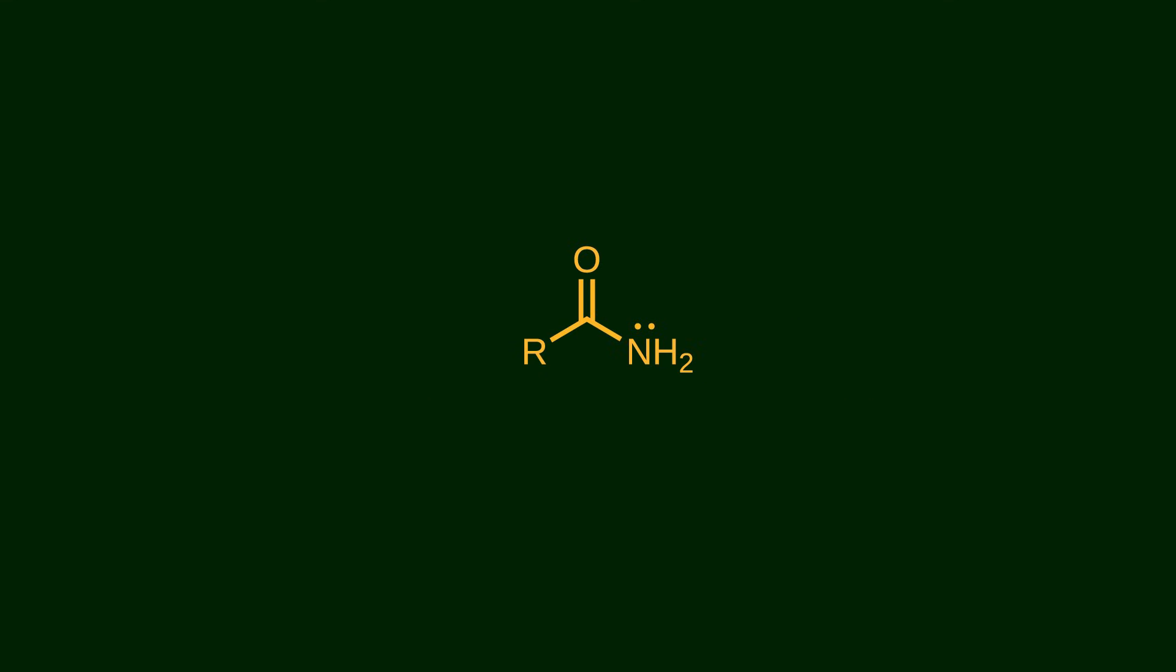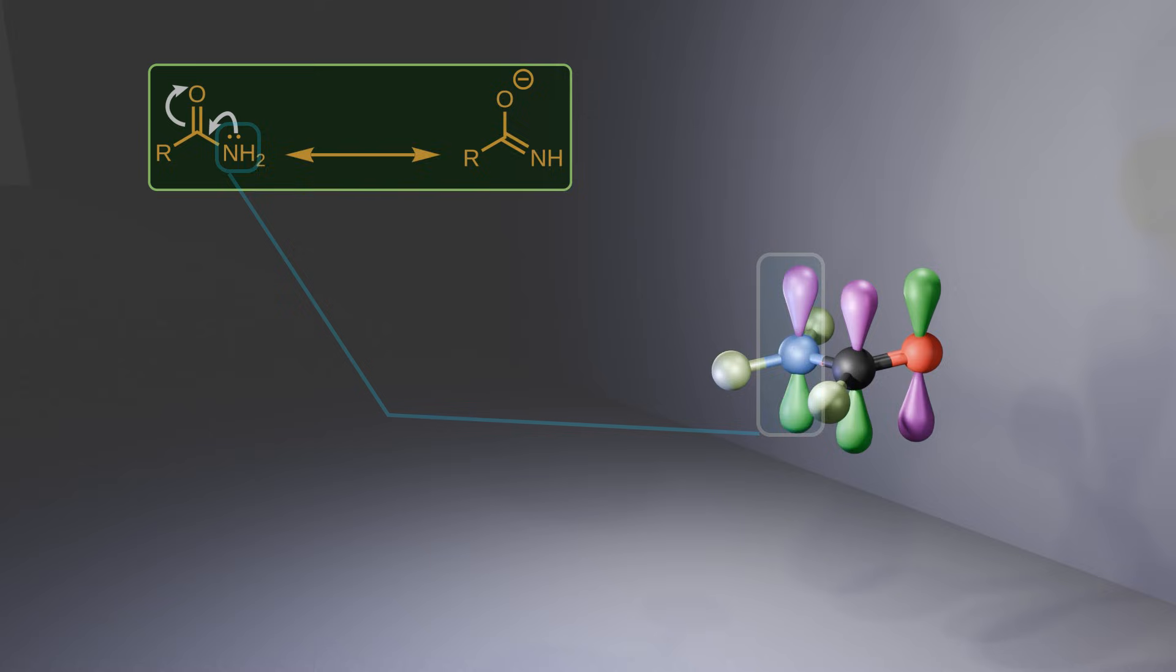Amide bond is another functional group that shows chameleonic behavior. All of you know that the nitrogen can resonate with the carbonyl group. Because of this resonance, it's very stable. It looks simple, but let's see the resonance from a different perspective. Here is the non-bonding orbital of the nitrogen atom interacting with the pi-star orbital of the carbonyl group.